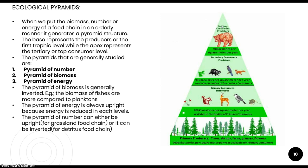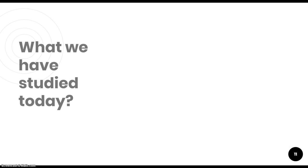The pyramid of number can either be upright — for example, in a grassland food chain — or inverted, for a detritus food chain. For instance, when a tiger or elephant dies, vultures come — say 10 vultures — and then millions of bacteria decompose it further. So as we move forward, the numbers can decrease or increase, making the pyramid upright or inverted.